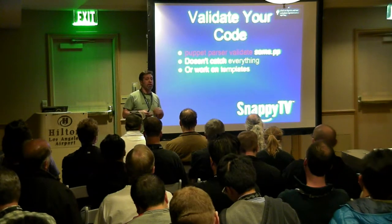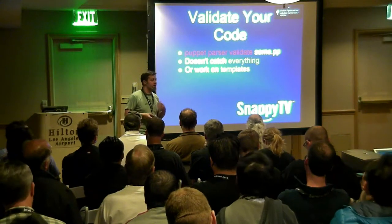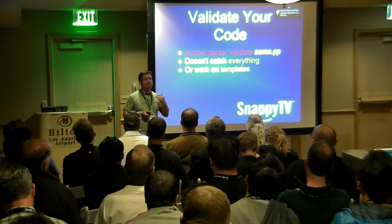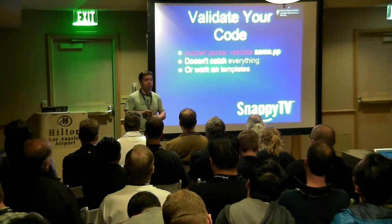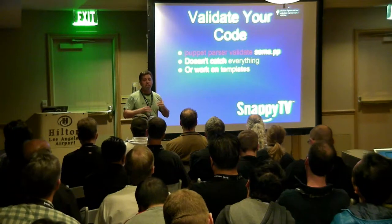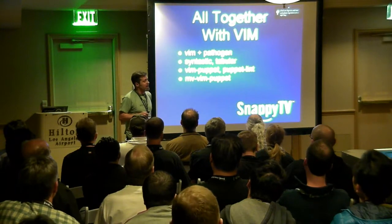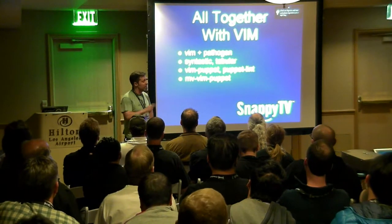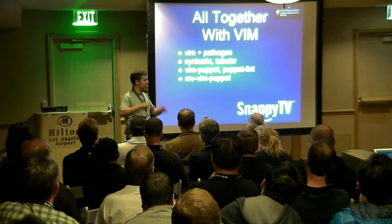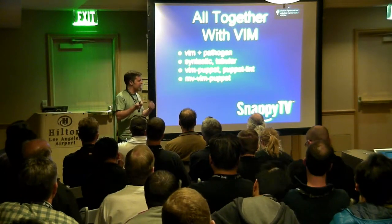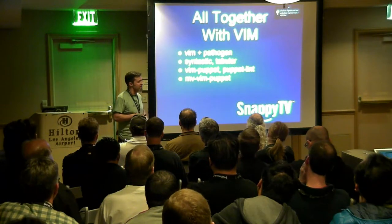It won't catch everything — if you've misnamed a class you're loading from inside another class, it won't find that. It doesn't work on templates. But it is a defense in depth: are we checking our syntax? Are we checking style? Are we making sure this PP can compile? This gets you 90% of the way there. I'll check a little Ruby something-or-other for compiling templates into the GitHub as an example — it runs it through ERB but it's not quite as cool as the other tools.